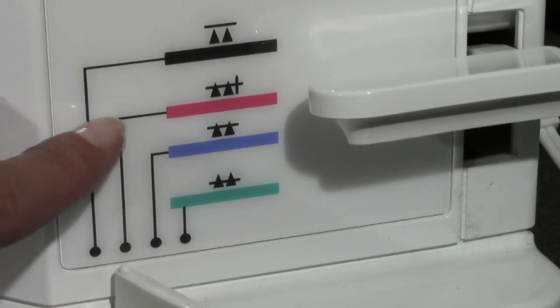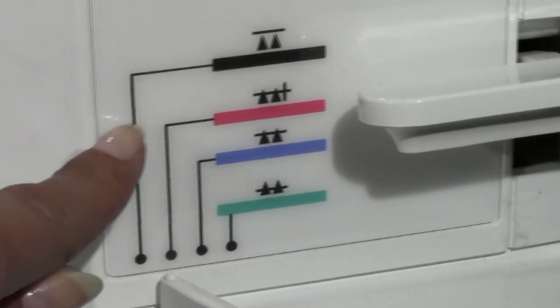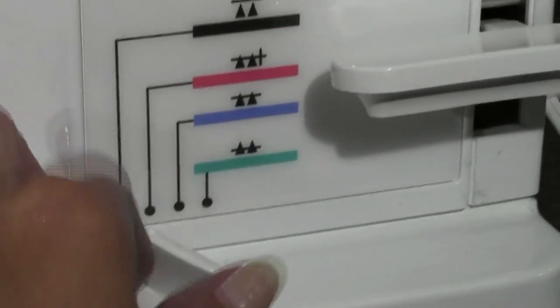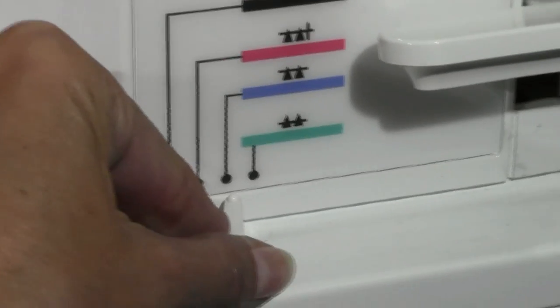You can see the little thing that sticks up here. Now I'd show you it on the feed dogs, but you can't see it, so I'm just showing you here. And this knob here, this is how you adjust. And we're going to turn that right to the pink.